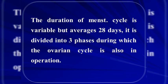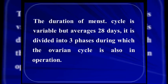The menstrual cycle varies from female to female, but the average is 28 days. It is divided into three phases, during which the ovarian cycle is also in operation — preparing either the oocyte or the endometrium for implantation.